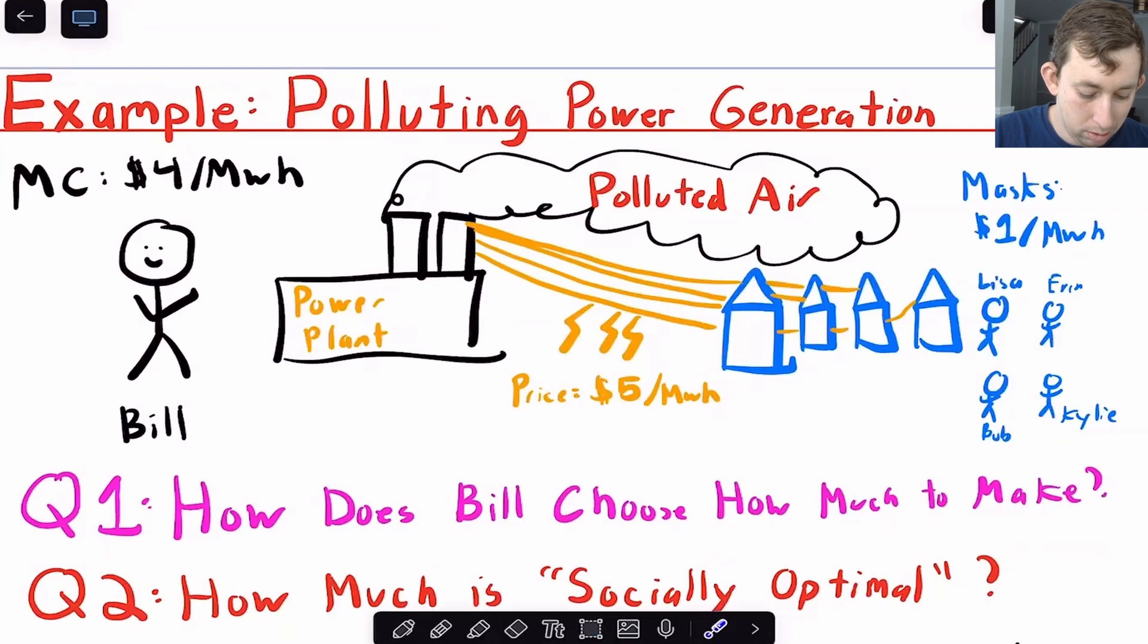And Bill, Bill owns the power plant that supplies electricity to this town. But Bill's power plant burns coal. So because Bill's power plant burns coal, you have this lovely cloud of polluted air that comes out of the smokestacks